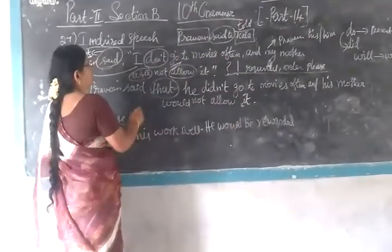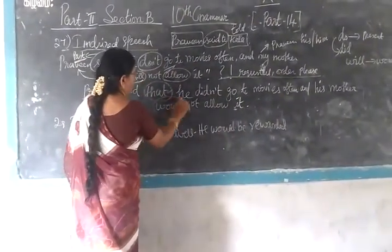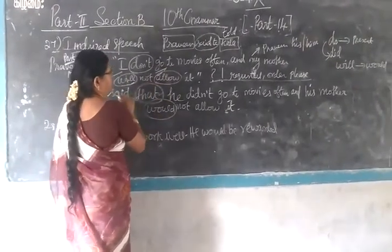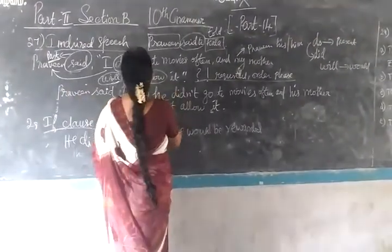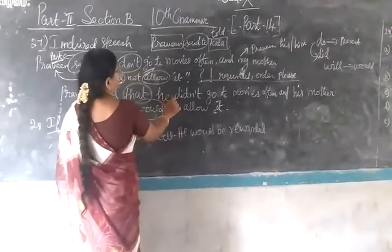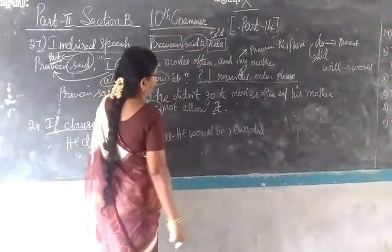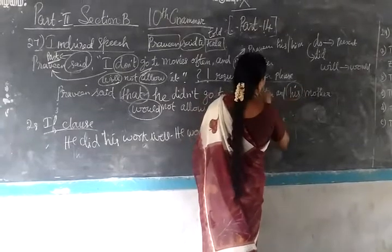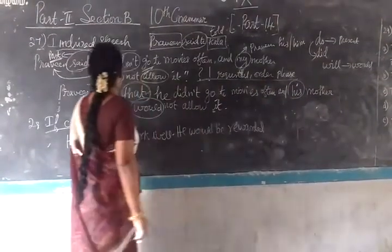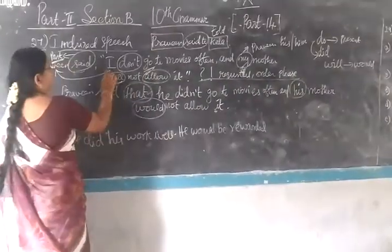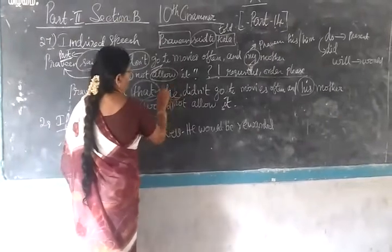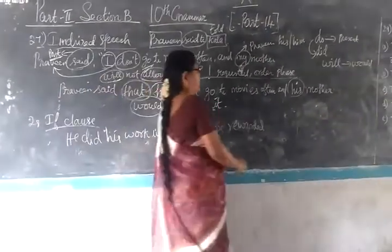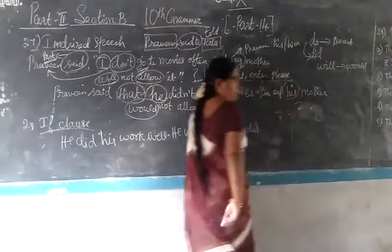So here what we have said: the connecting word is 'that', 'don't' changes to 'didn't', 'my' changes to 'his', 'I' changes to 'he', and 'will' changes to 'would'. This is the concept — if you write this, you can get two marks.